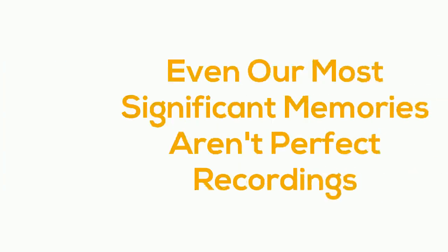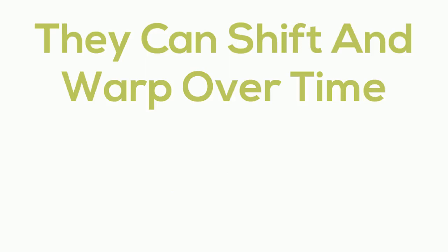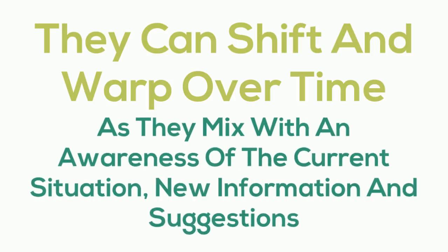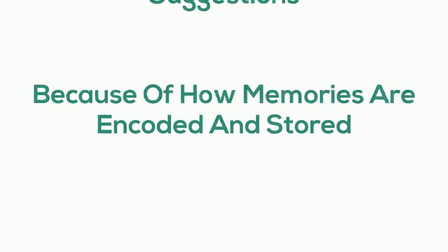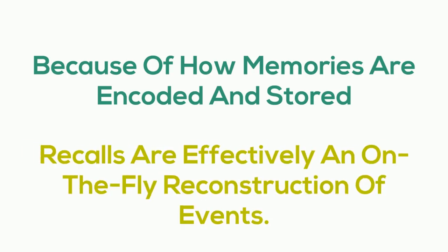never quite identical to the original. Even our most significant memories — the ones that form the foundation of our life story — aren't perfect recordings, and they can shift and warp over time as they are mixed with an awareness of the current situation, new information, and suggestions. Because of the way memories are encoded and stored across different types of memory, these memory recalls are effectively an on-the-fly reconstruction of elements scattered throughout various parts of our brain.